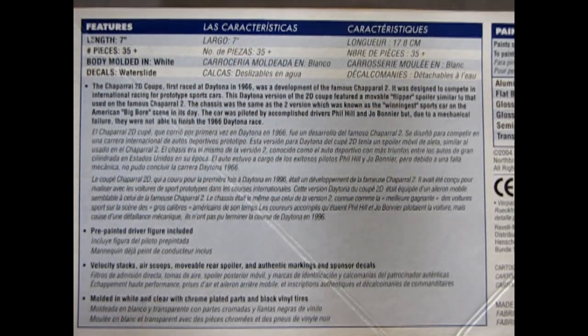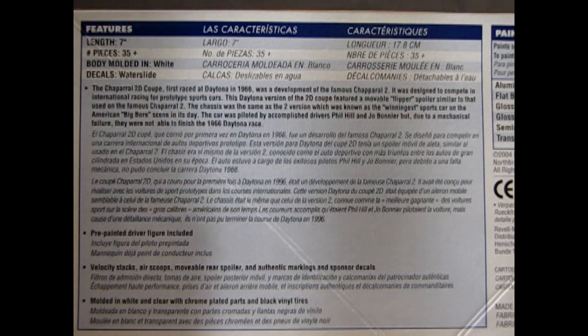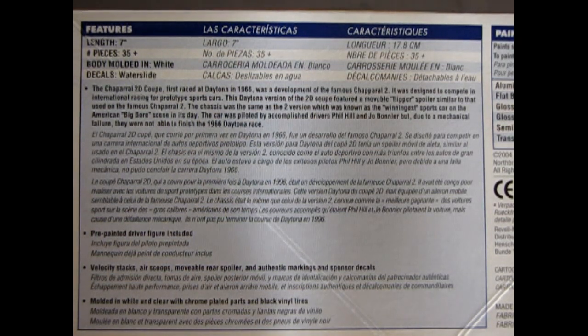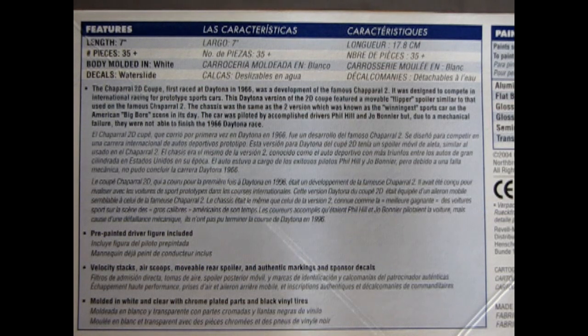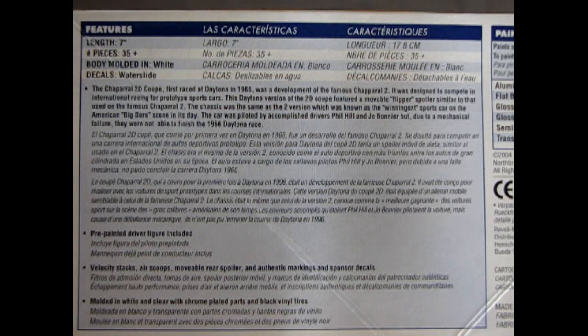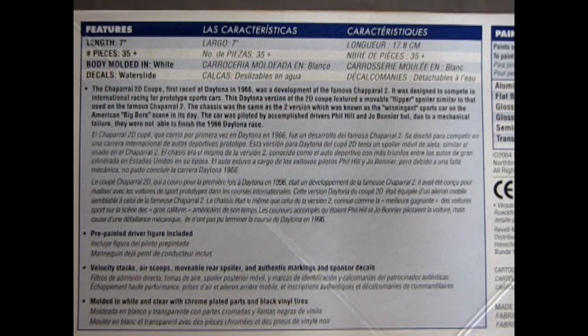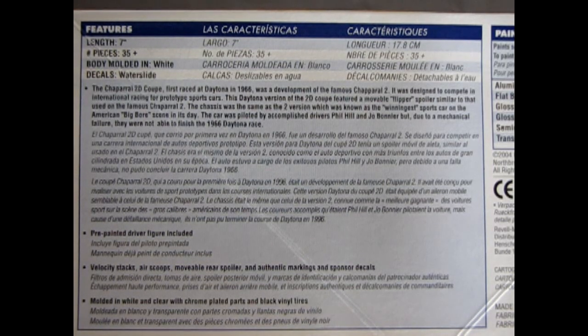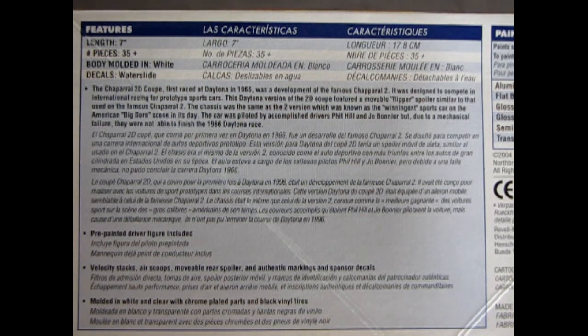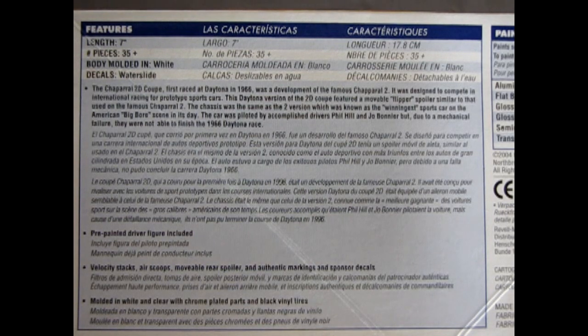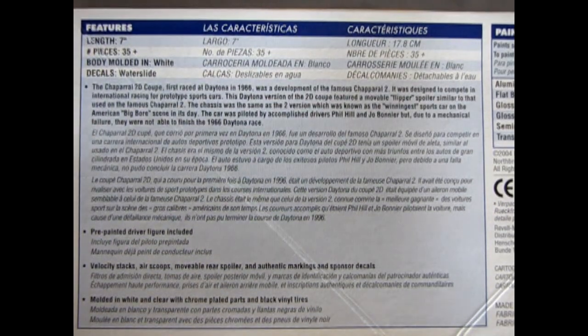So first off the history, the Chaparral 2D Coupe first raced at Daytona in 1966 was a development of the famous Chaparral 2. It was designed to compete in international racing for prototype sports cars. This Daytona version of the 2D Coupe featured a movable flipper spoiler similar to that used on the famous Chaparral 2. The chassis was the same as the 2 version which was known as the wingiest sports car on the American big bore scene in its day. The car was piloted by accomplished drivers Phil Hill and Joe Bonnier but due to a mechanical failure they were not able to finish the 1966 Daytona race.